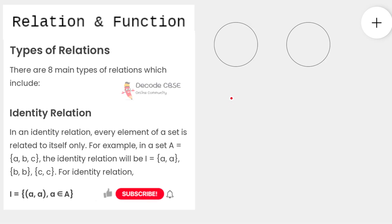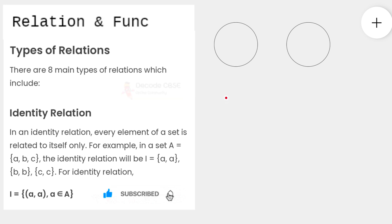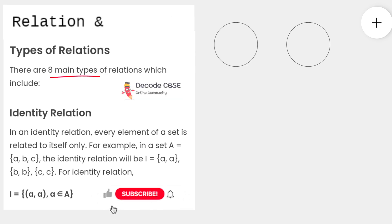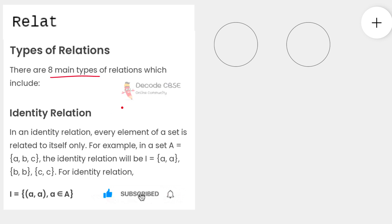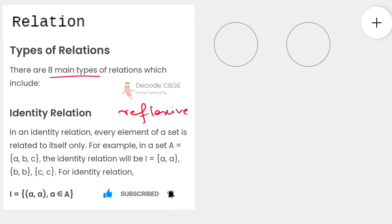Hello everyone. In today's session we are going to discuss one of the most important relations in your Relations and Functions chapter, which is included in your Class 12 syllabus. This particular relation is one of the eight main types of relations. Today we're going to discuss the identity relation in detail, and also the difference between identity relation and reflexive relation. A lot of students often confuse identity relation with reflexive relation, but there is a stark difference between the two.